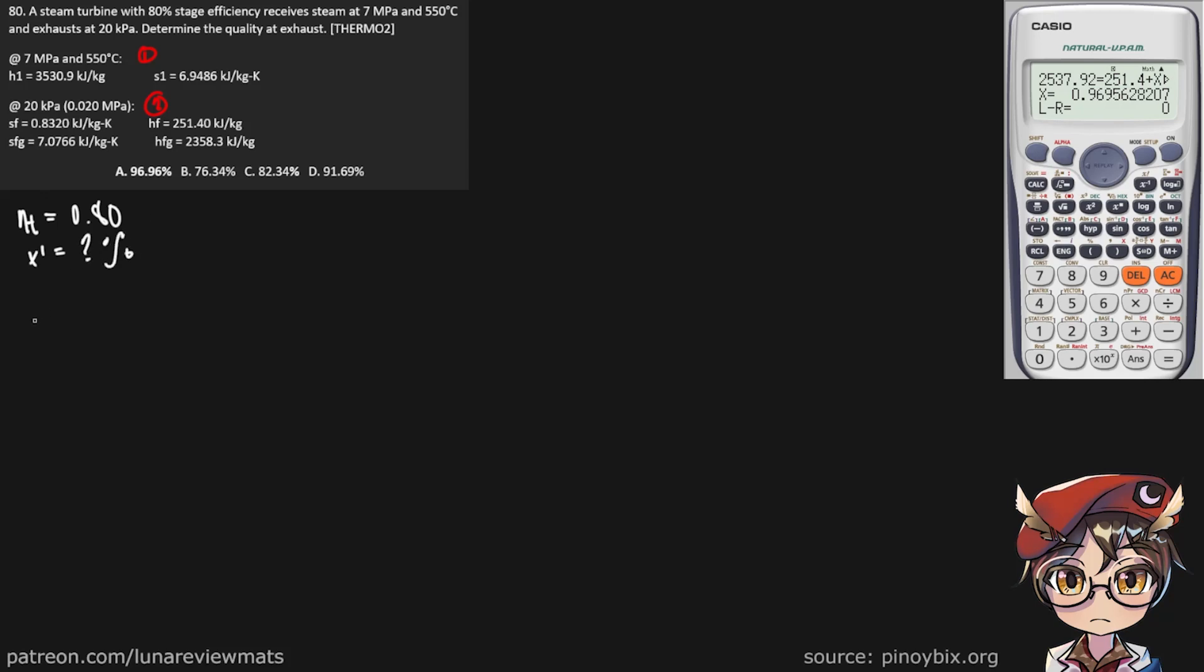To get this, we need H2', which has the following formula: H2' = HF2 + X' * HFG2. Now, we already have HF2 over here, and HFG2 over here as well.